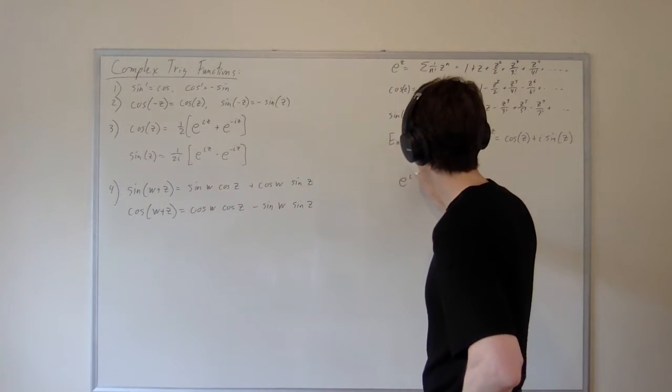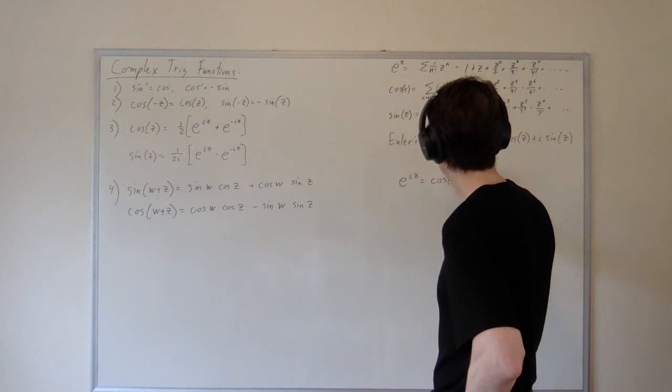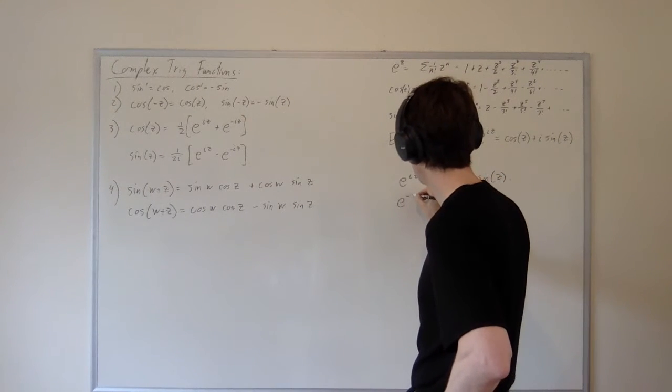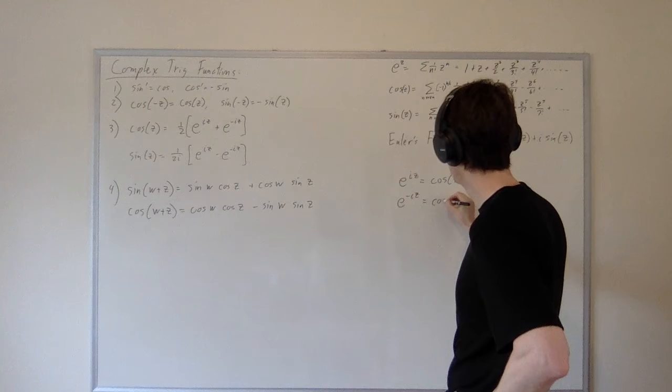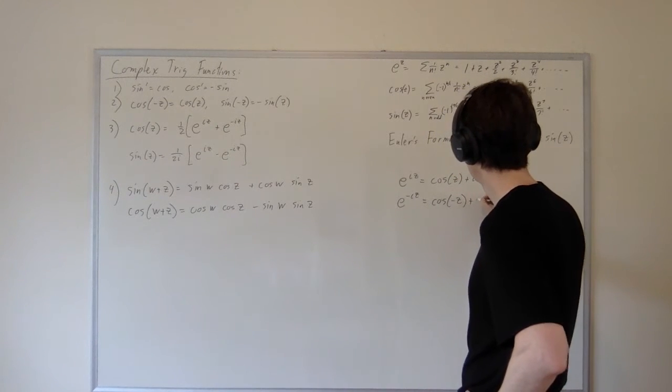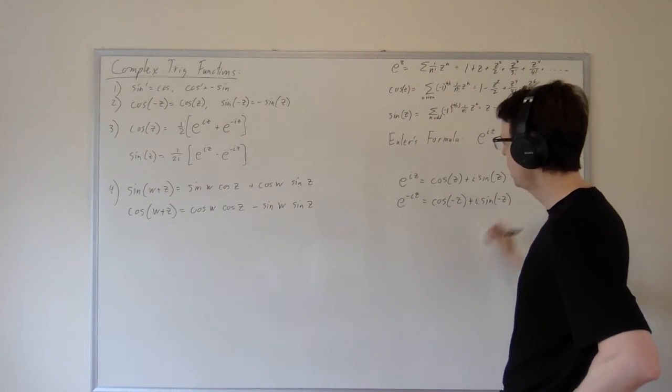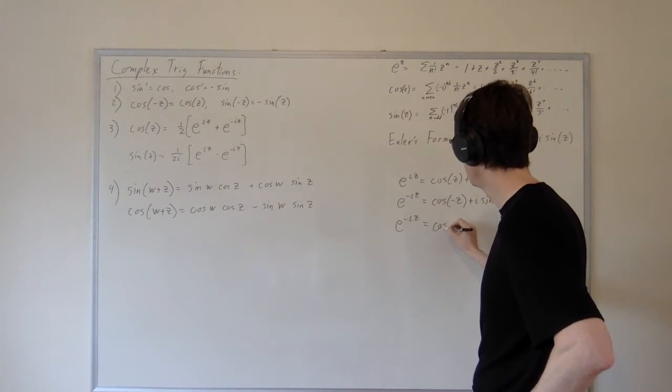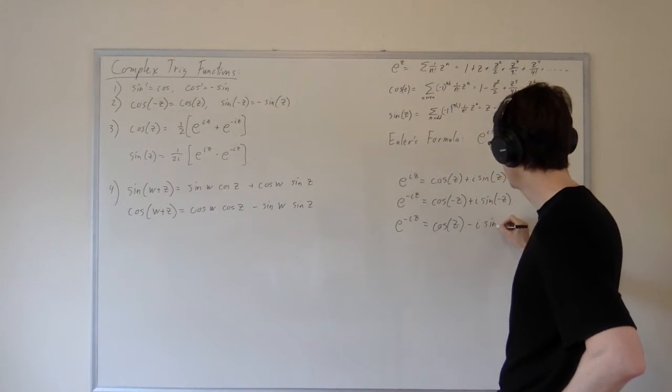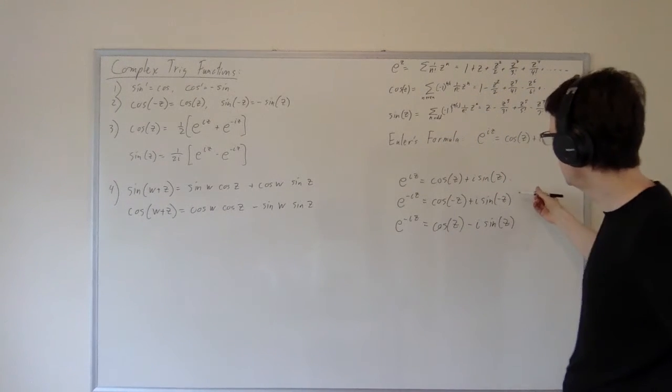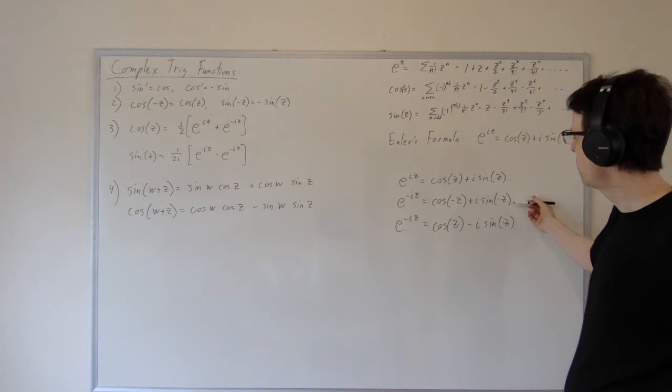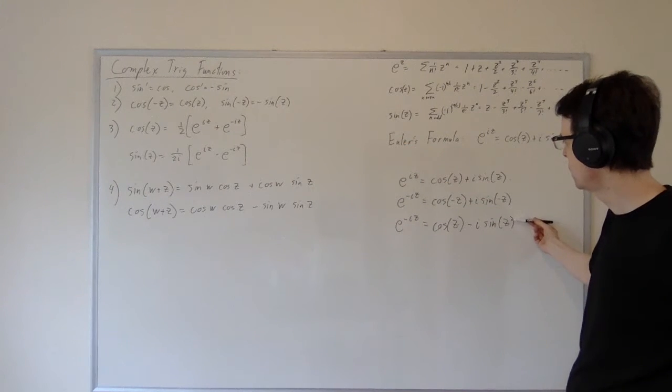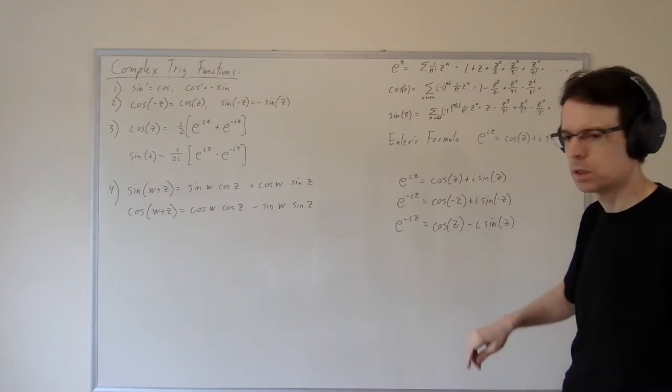If e to the iz equals cosine of z plus i sine of z, then e to the minus iz equals cosine of minus z plus i sine of minus z. And so e to the minus iz equals cosine of z minus i sine of z. In this line I've simply taken Euler's identity and I've plugged in minus z for z. And in this line I've used the even and odd properties of sine and cosine to figure out what sine of minus z and cosine of minus z are.